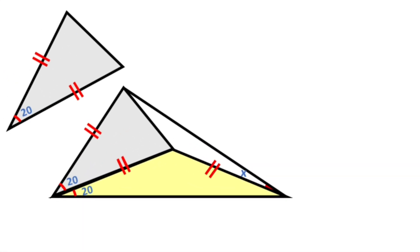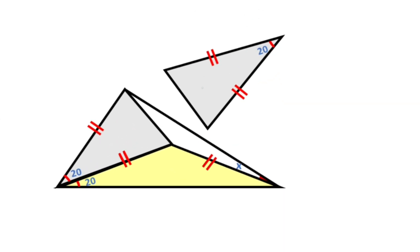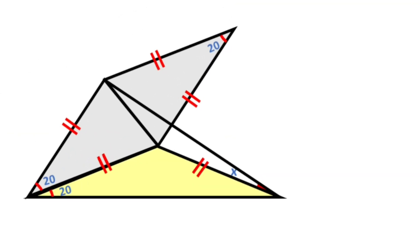Let's reverse it and paste it. Therefore these are 80 degrees, right? Because of this, the triangle's two angles must be equal at 80 degrees, because these two triangles are congruent. And here is 20 degrees, which means 60 degrees are left here.